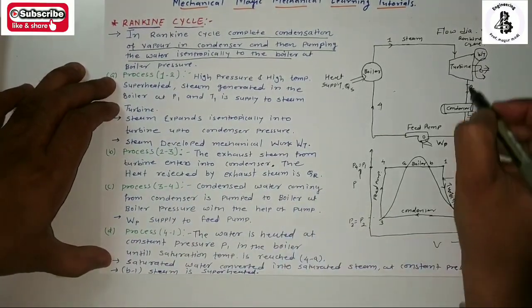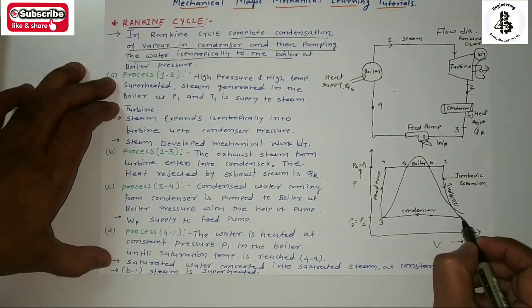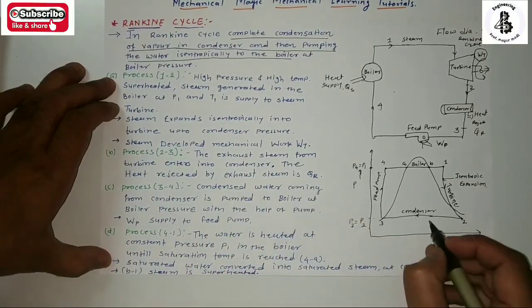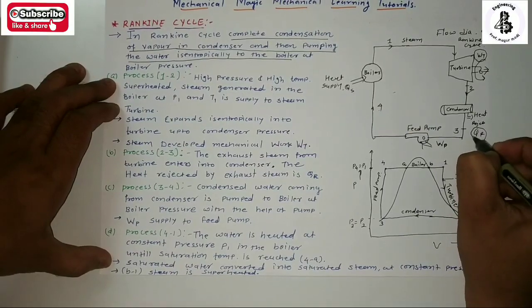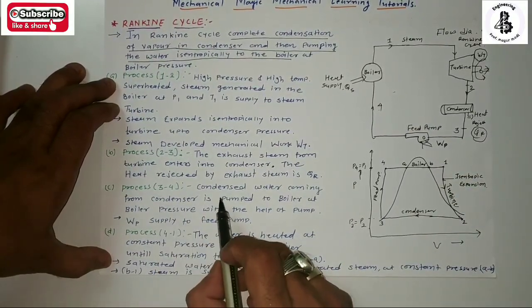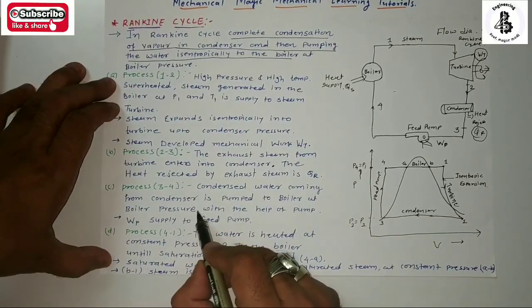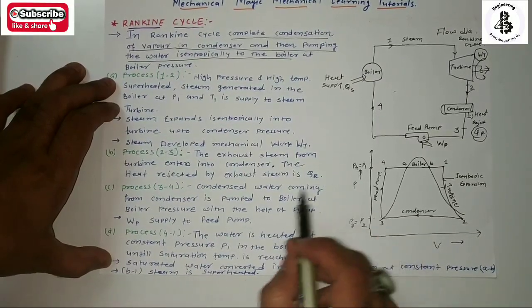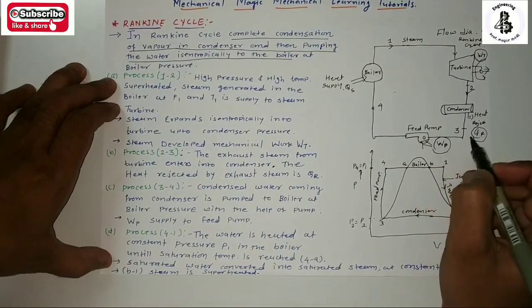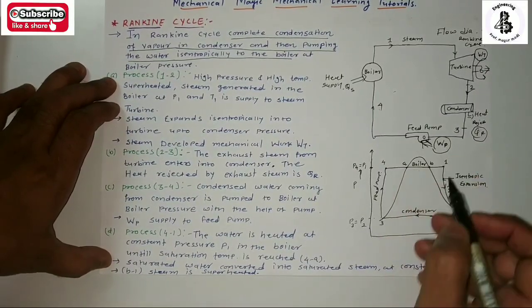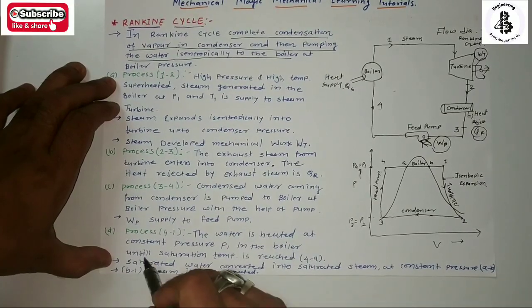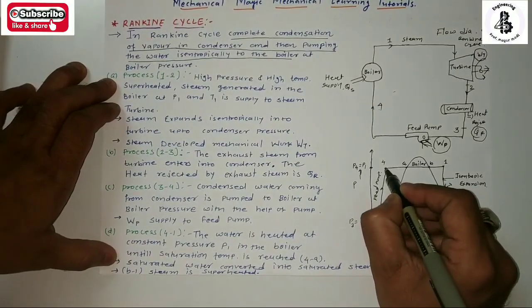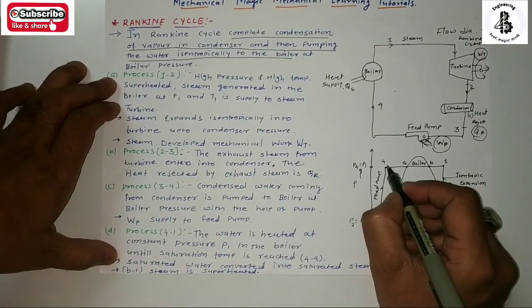Process 2 to 3: the exhaust steam from the turbine enters the condenser. The heat rejected by the exhaust steam is QR. Process 3 to 4: the condensed water coming from the condenser is pumped to the boiler pressure with the help of the pump. Some work is done on the pump, called WP, which consumes energy.